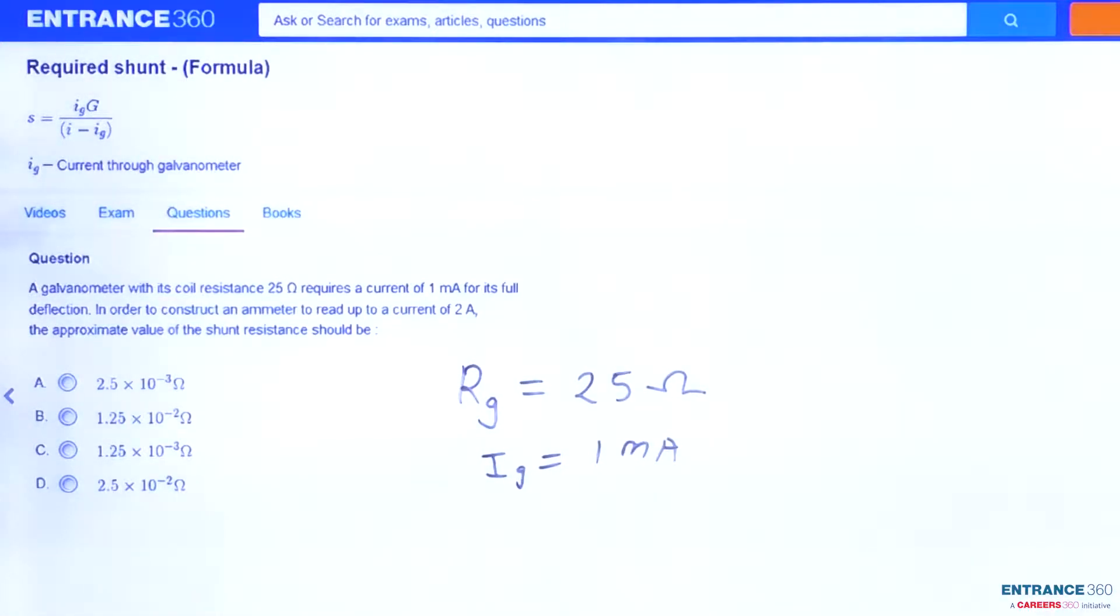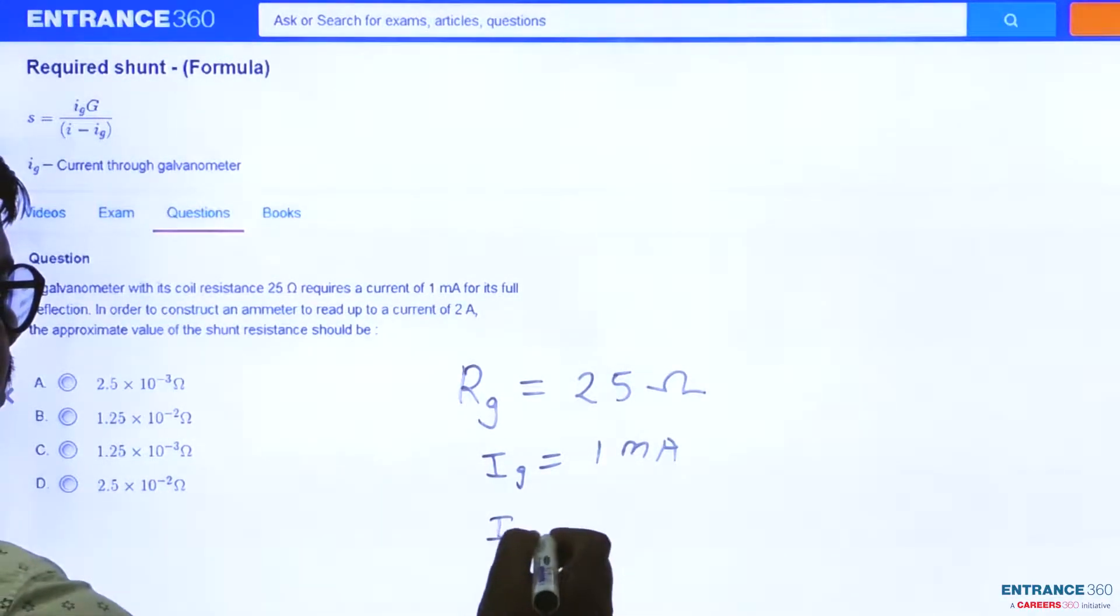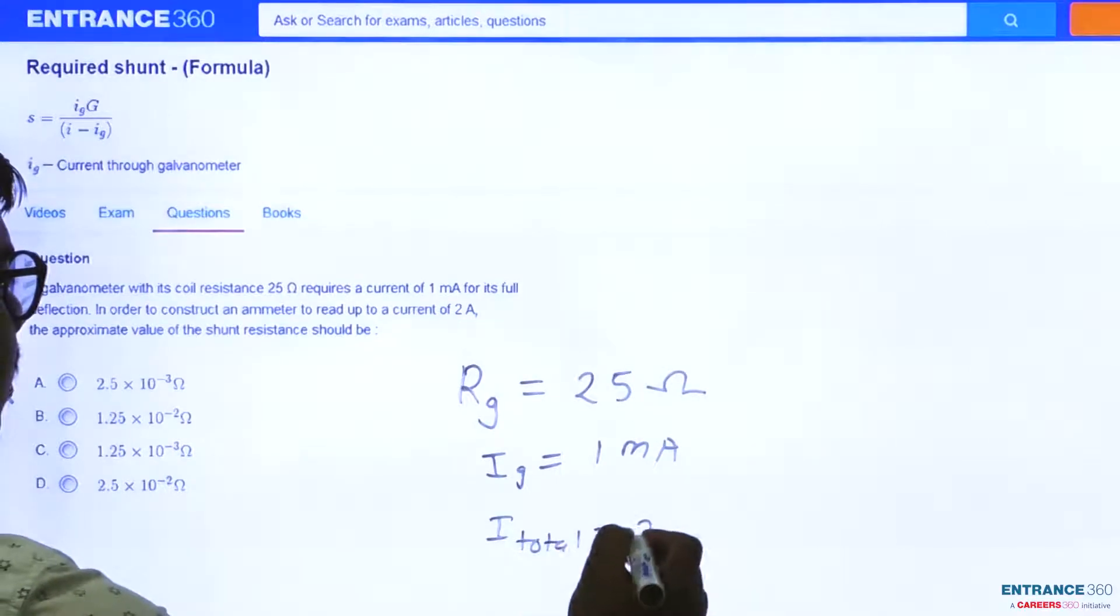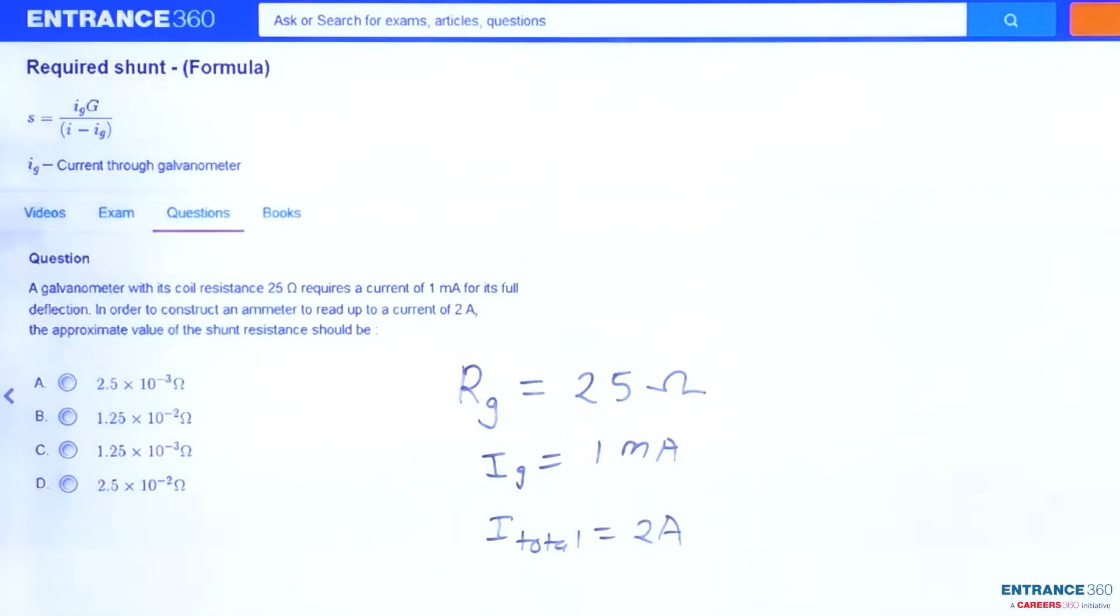Now in order to construct an ammeter to read current up to 2 ampere, so we know that galvanometer can be converted into ammeter with the help of shunt resistance. So for ammeter, value of current, that is I total, is given as 2 ampere and we want to find out the value of shunt resistance, that is Rs.